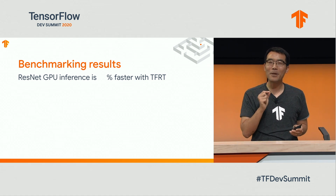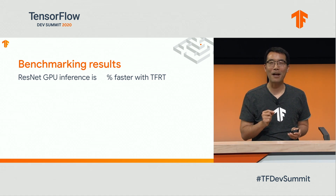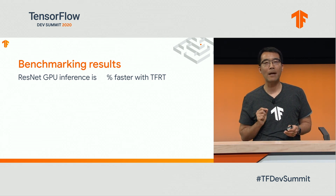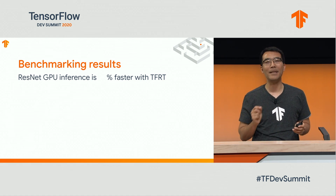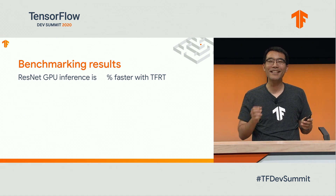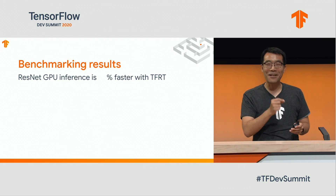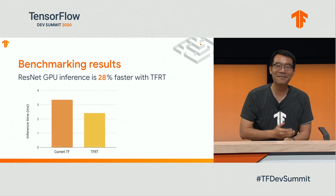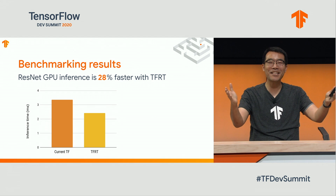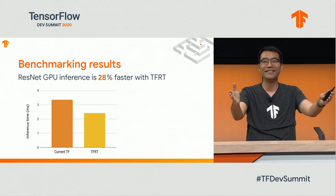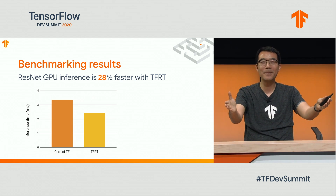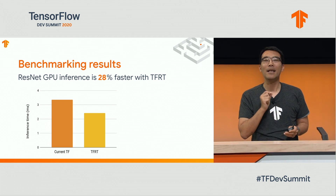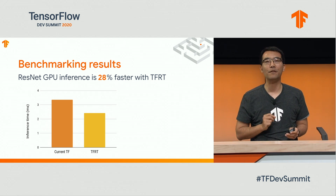I should first note that the current runtime is already highly optimized for graph execution and serving needs. Through multiple runs, it had a respectable average inference time of 3.3 milliseconds. In comparison, TFRT had an average inference time of 2.4 milliseconds. This is a handsome improvement of 28%, and there are more optimizations underway. Our internal testing also showed that TFRT is scoring favorably over alternatives to TensorFlow on this model.